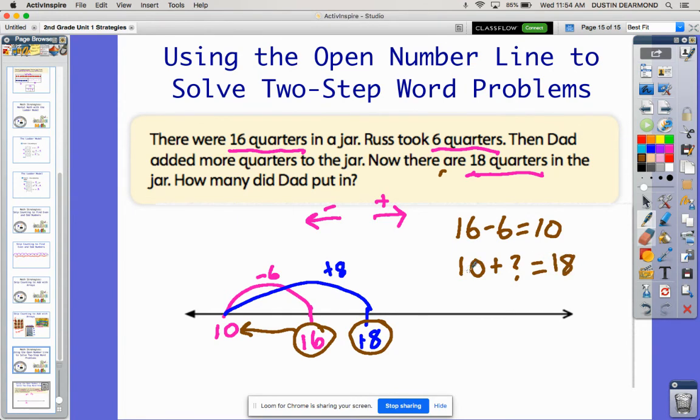And so I could quickly kind of see, knowing my place value, that 10 plus 8 equals 18. So dad, I'm going to write it down here, added eight quarters. And there we go. Using an open number line to help us visualize what's happening in our word problem.